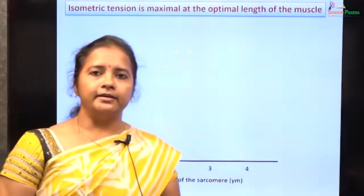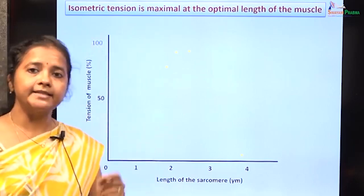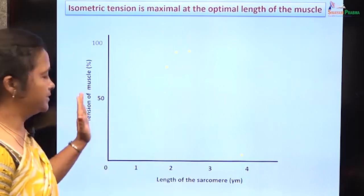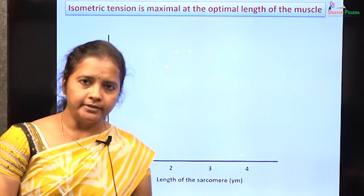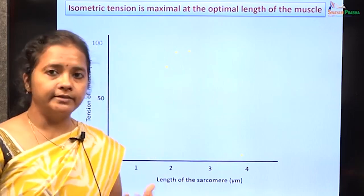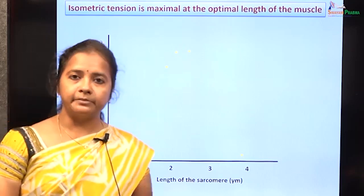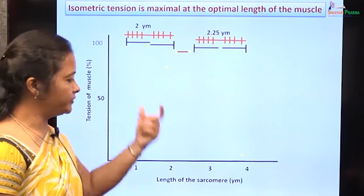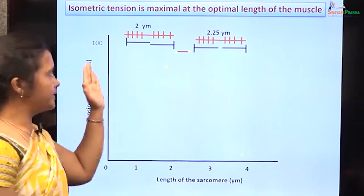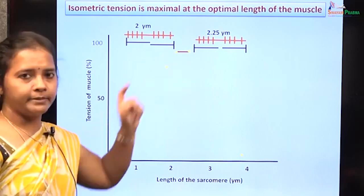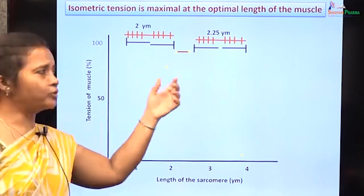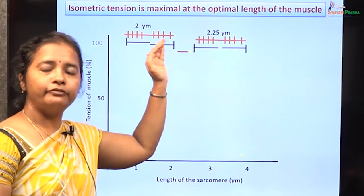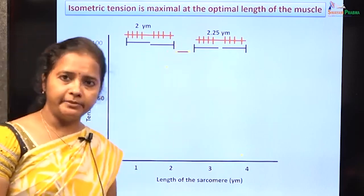When we consider the length-tension relationship of a single skeletal muscle fiber — plotting the sarcomere length against the tension developed — the ideal or optimal length at which the skeletal muscle fiber can exert its maximum tension is between 2 to 2.25 micrometers of sarcomere length. At this length, the actin and myosin overlap is optimal for the skeletal muscle to generate its maximum tension.